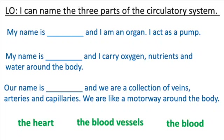In your science books — your yellow books — I would like you to copy the learning objective, which is: I can name the three parts of the circulatory system. Then you are going to write each of those sentences. The sentences are in the first person, and you are going to fill in one of those green noun phrases from the bottom. The first one is: 'My name is ___, and I am an organ. I act as a pump.' Choose which of those green noun phrases can fill that gap.